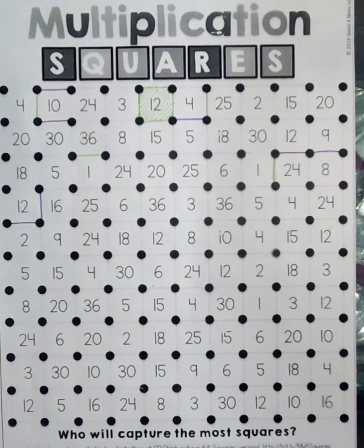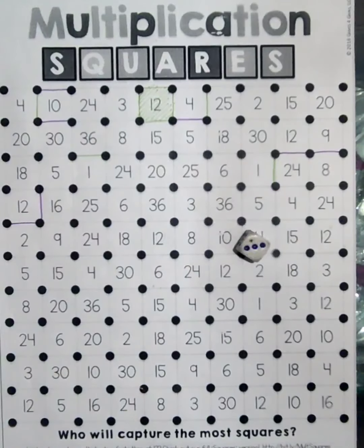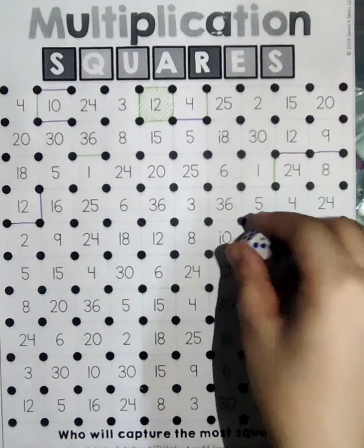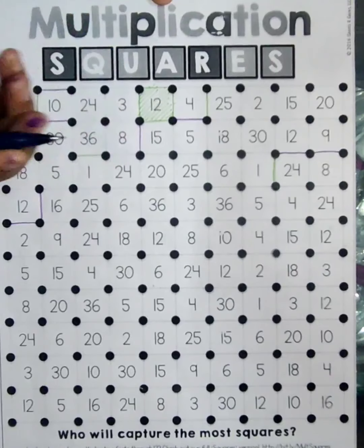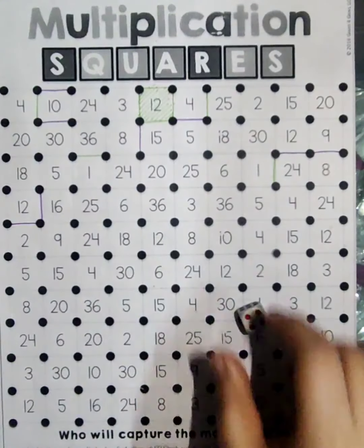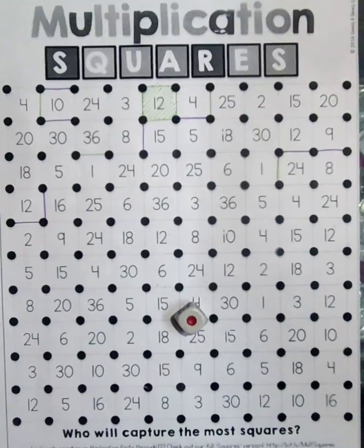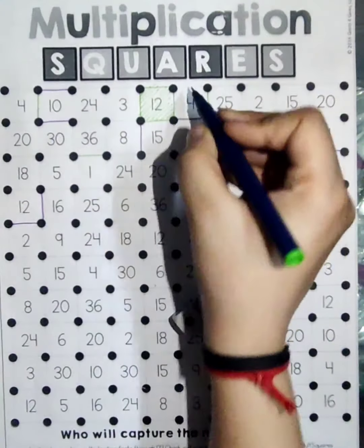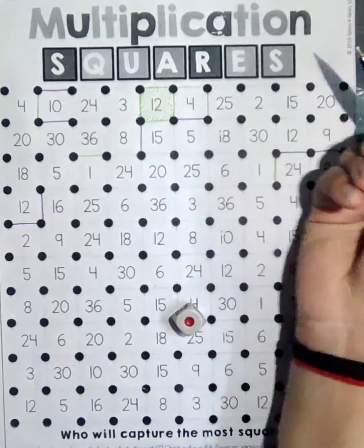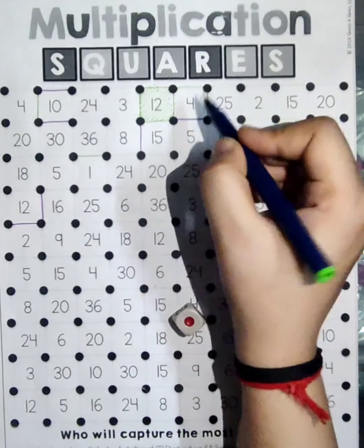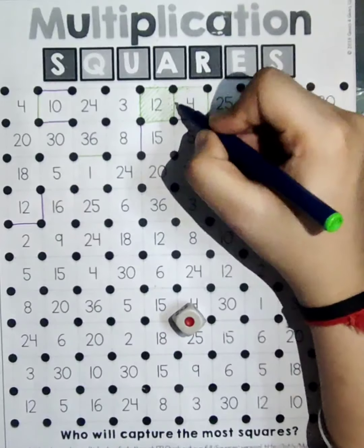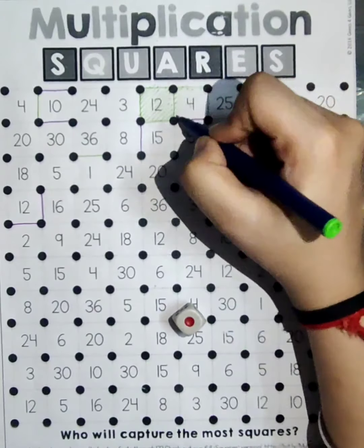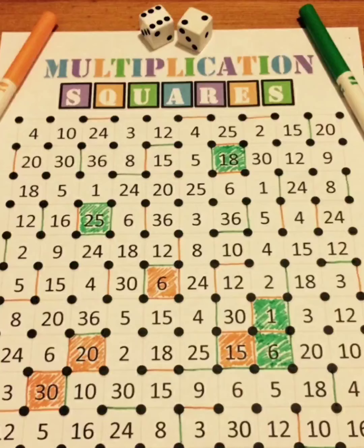She got five and then three. Five times three is fifteen. I got four and then one. Four times one is four, so I can just make my line here. I finished this box, so I'm going to shade this box. I got the winner for this box. The one who will be shading the maximum number of boxes would be the winner. I hope you enjoyed it.